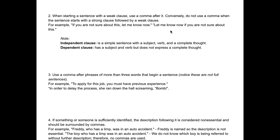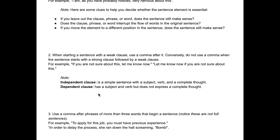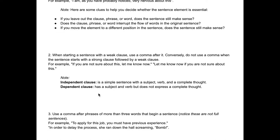Rule two is about weak and strong clauses, which you might also know as independent and dependent clauses. An independent clause is essentially just a sentence — it can stand on its own. A dependent clause often has a subject and a verb but it's not a complete thought. A lot of dependent clauses start with words like "when," "which," or "for example" — you can't really have a sentence that just starts with "which."